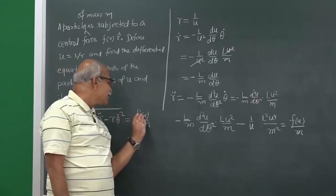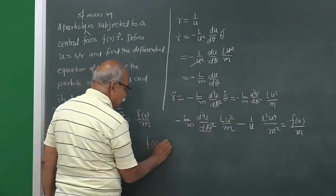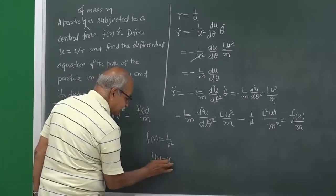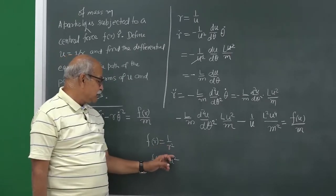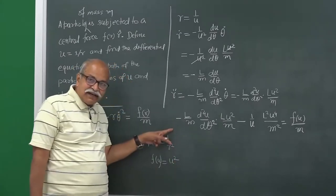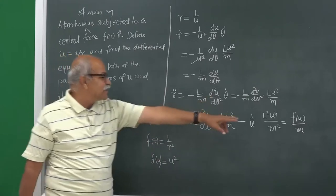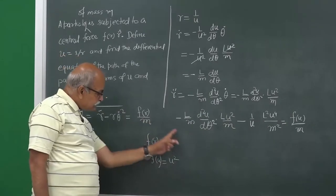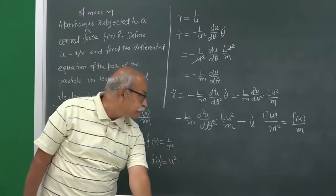This functional form is somewhat different when written in terms of u versus r. For example, if f(r) = 1/r², then writing r = 1/u it becomes u². So in principle this is a different function. The functional form given in terms of r just has to be converted into u, and that is what we write there.